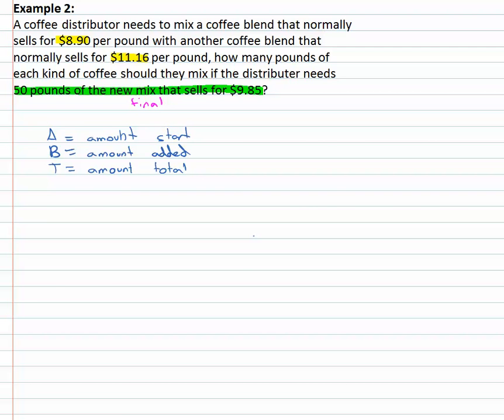So let's fill in what we know. We're given the price of the starting coffee. It starts at eight ninety. We're also going to add to it coffee that sells for eleven sixteen. The total combination is going to sell for nine eighty five.